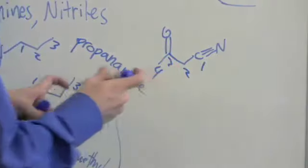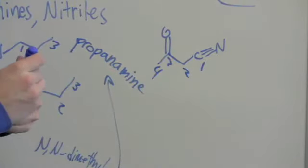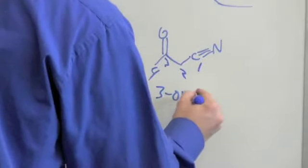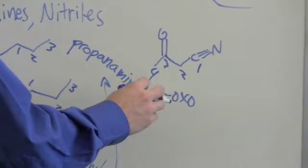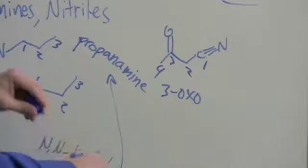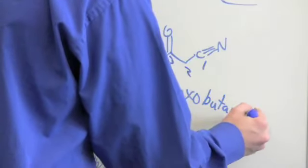So we're going to number 1, 2, 3, 4, and this is going to be a 3-oxo, and then what we want to do is name the parent chain, the chain of carbons, and so it's going to be a 3-oxobutanenitrile.